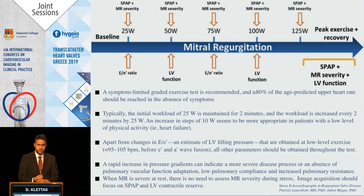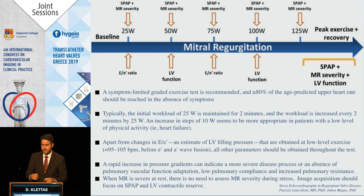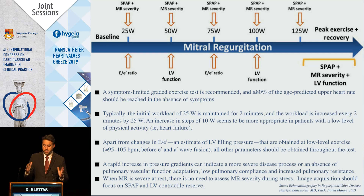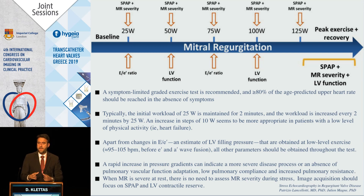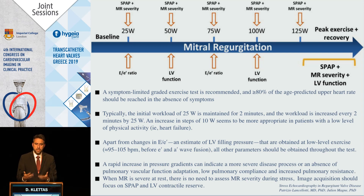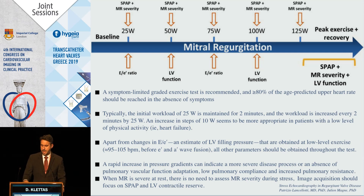Diastolic function must definitely be measured before reaching 100 beats per minute, because after this heart rate the E and A waves merge and it is not easy to determine. Also, if MR is severe at rest and does not improve throughout the test, it makes no sense continuing to image the MR. We have more time to focus on pulmonary pressures and LV function.